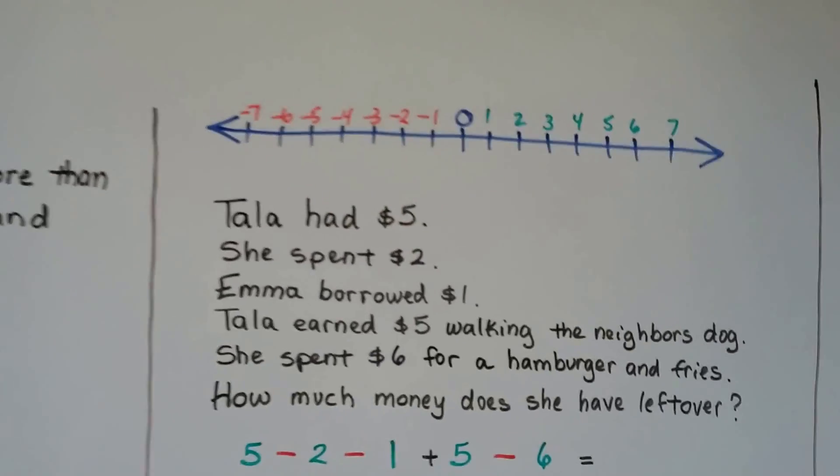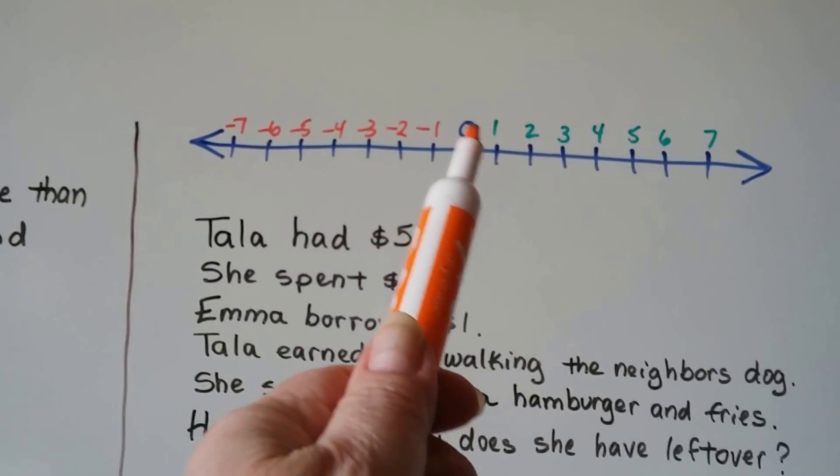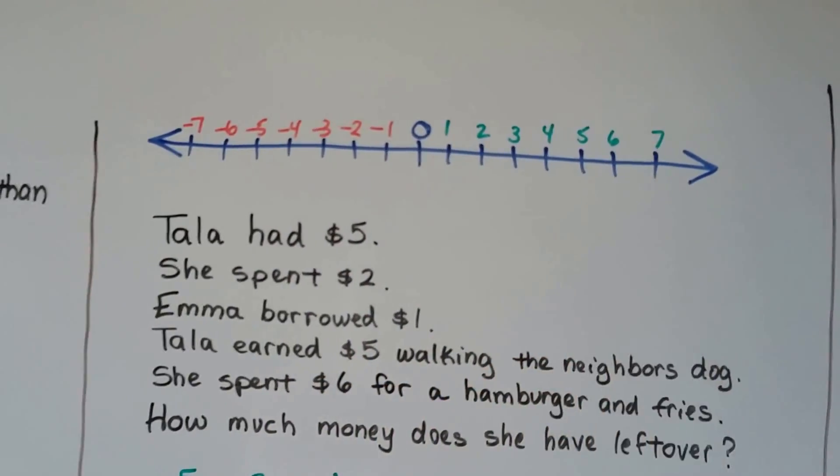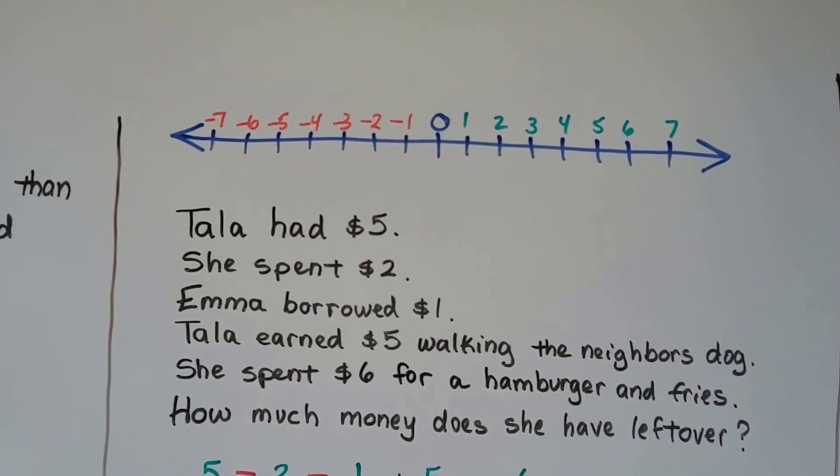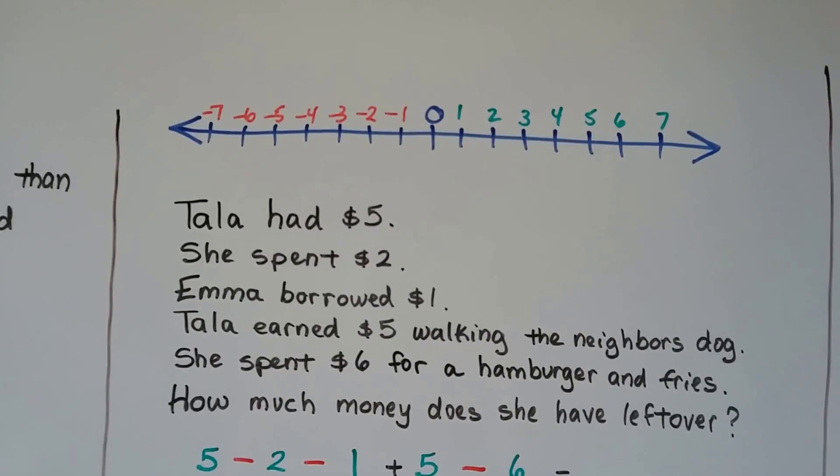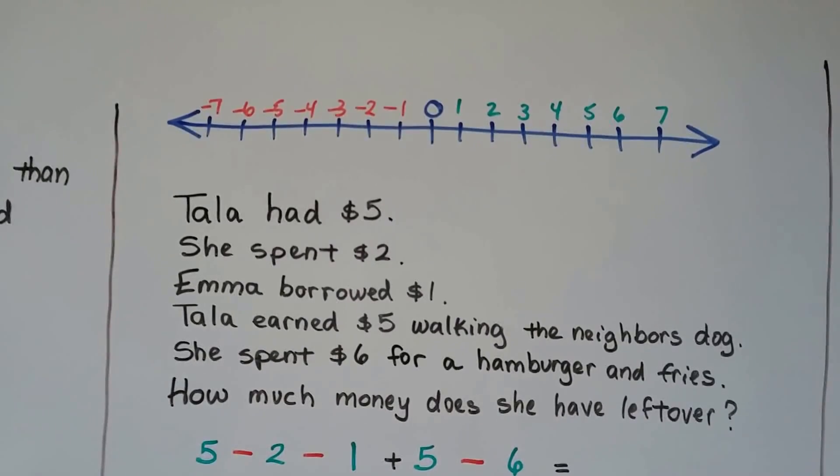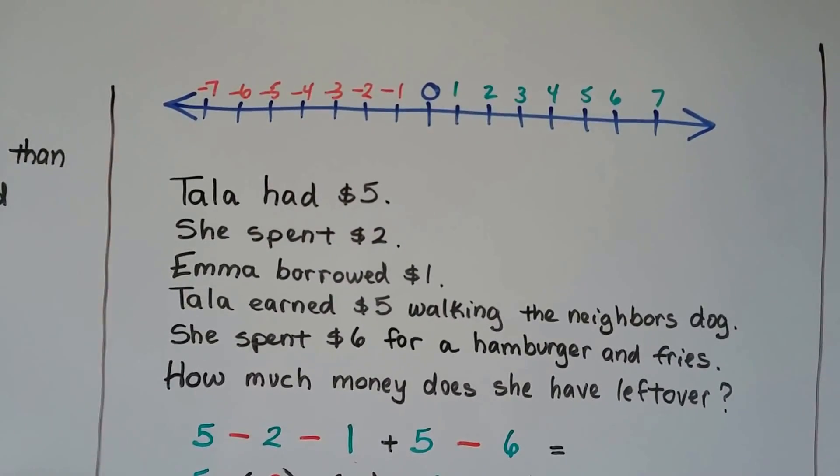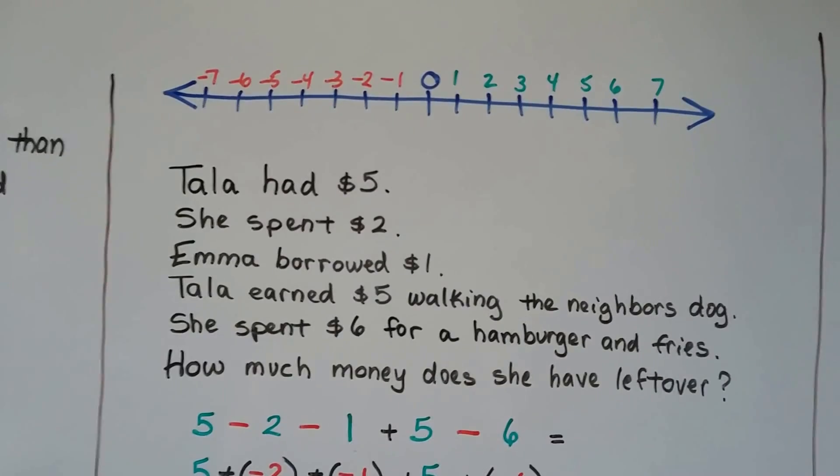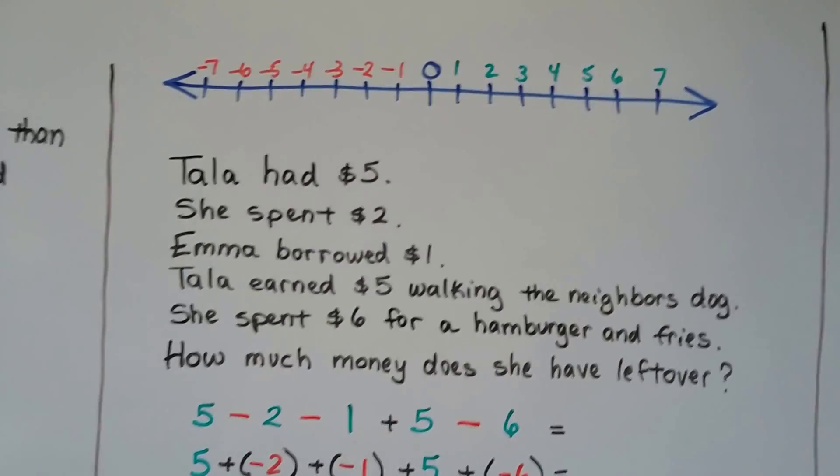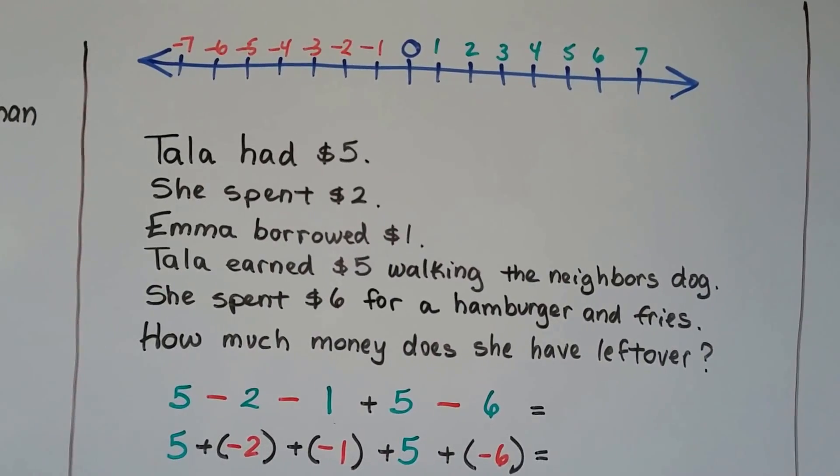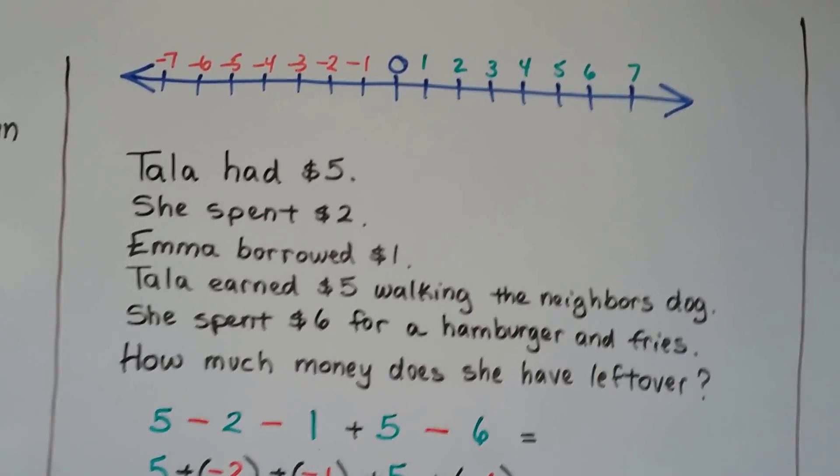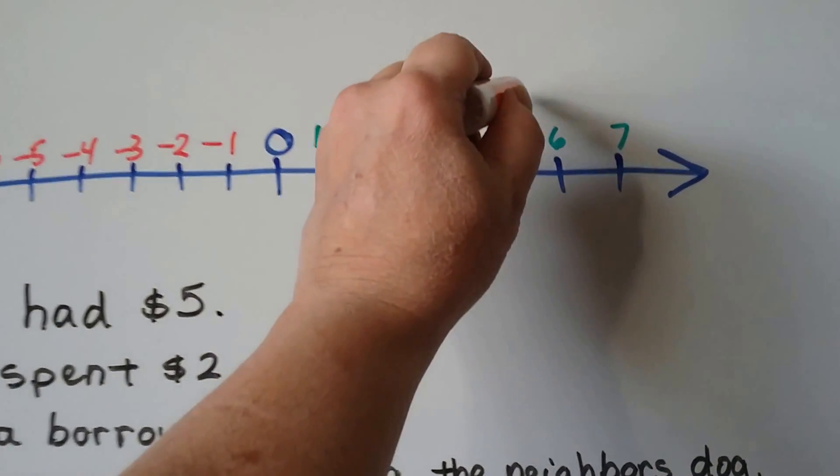Here we've got a horizontal one. You can see the 0 in the middle, the negative numbers and the positive numbers. So if this was to help us with dollar amounts and Tala had $5 and she spent $2 and then Emma borrowed a dollar from her and then she earned $5 walking the neighbor's dog and then spent $6 for hamburger and fries. How much money does Tala have left over? So if she had $5 that means she was up here, right? And she spent $2 so we're going to go to this way and now we're at the 3.